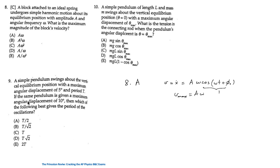For question 9: a simple pendulum swings about the vertical equilibrium position with a maximum angular displacement of 5 degrees and period T. If the same pendulum is given a maximum angular displacement of 10 degrees, which of the following best gives the period of oscillations?